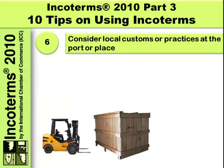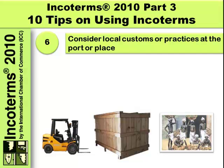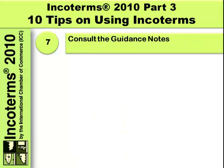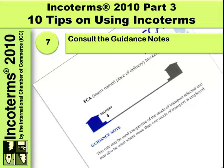Tip number six: consider local customs and practices at the port or place. If we are sending a very large crate, like we can see there, we might consider that there'd be handling equipment available in the destination port. However, we might find that there are only local laborers and no handling equipment — a bit of a problem.